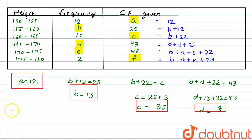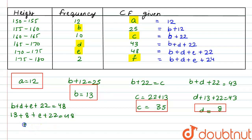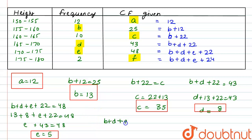In the next equation, B plus D plus E plus 22 is equal to 48. We already have B as 13 and D as 8, so 13 plus 8 plus E plus 22 equals 48, giving E plus 43 equals 48, so E is equal to 5. For the last equation, F equals B plus D plus E plus 24, so F is equal to 24 plus 13 plus 8 plus 5, giving F equal to 50.